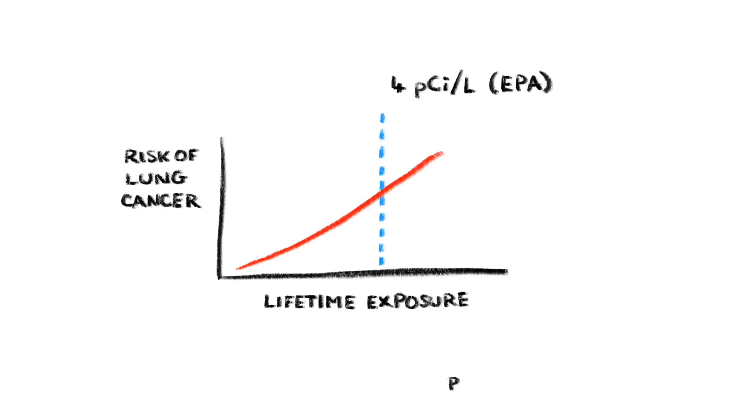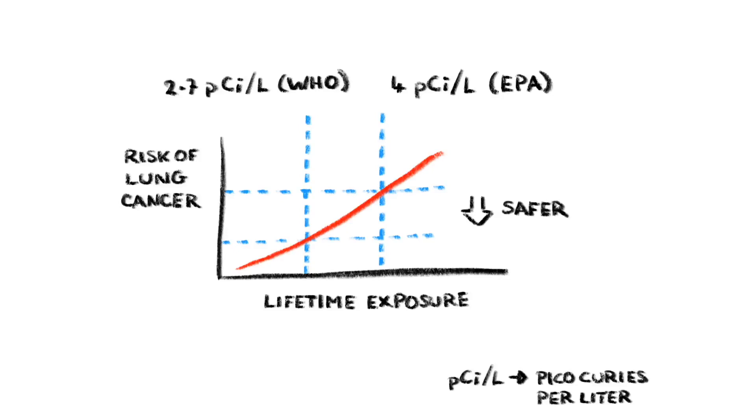In the US, the Environmental Protection Agency recommends you take action to reduce radon levels if they're above 4 picocuries per liter. The World Health Organization is a little bit more conservative and suggests you do something about it if the levels are above 2.7 picocuries per liter.